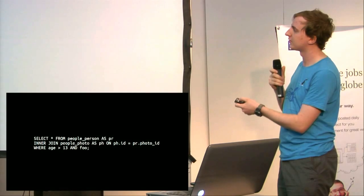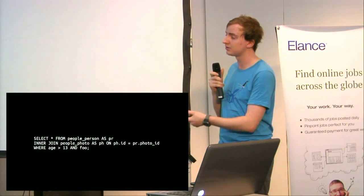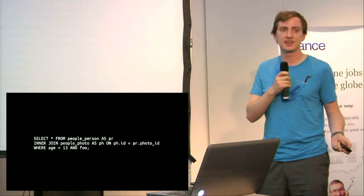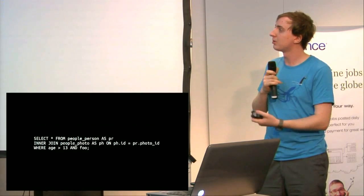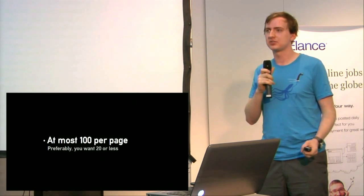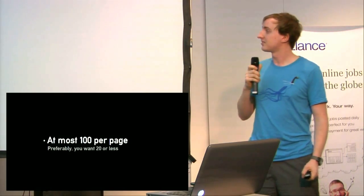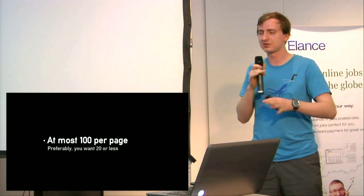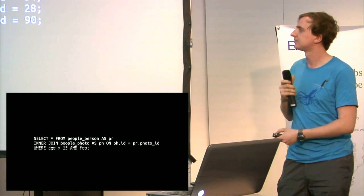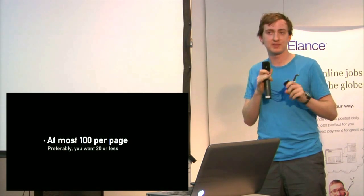A single join query — select from person, join photo — replaces those seven trips to the database with one trip, and on a decent database those will be the same speed. You want at most 100 queries per page, ideally about 20. I've seen sites with 20,000 queries per page — they were slow. I've seen sites with about 1,000 too. 20 or less is my personal benchmark for a good site; that generally means your slowdown won't be the database, it'll be somewhere else.